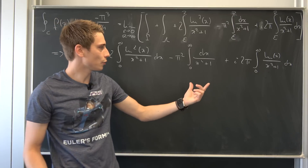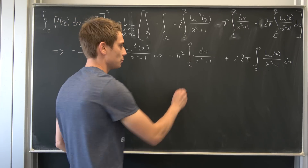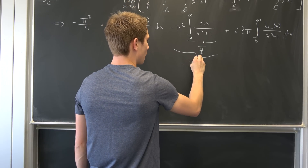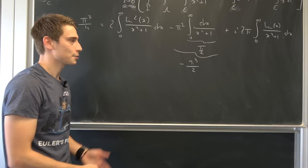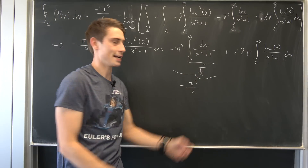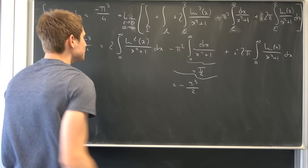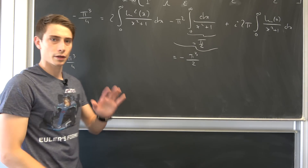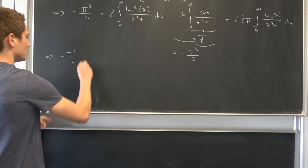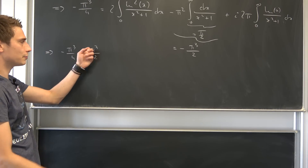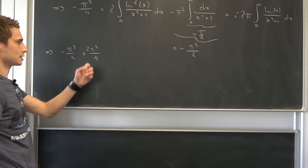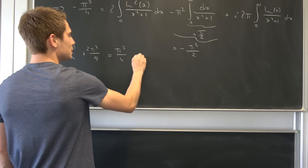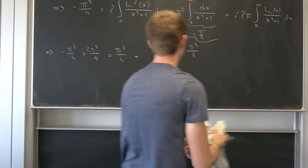In the previous video this week, we showed that the integral of 1/(x² + 1) from 0 to infinity evaluates to π/2. So that whole term becomes −π³/2. Adding this to both sides: we have −π³/4 plus π³/2, which you can write as 2π³/4, giving π³/4 on the left. And this whole chunk is now equal to 2 times our target integral.